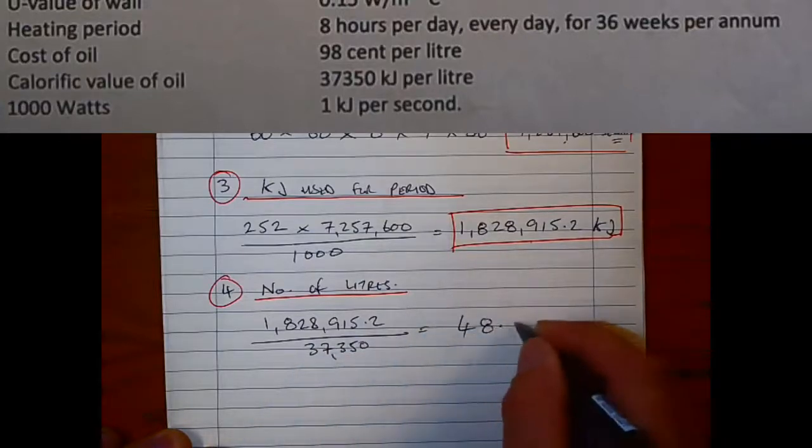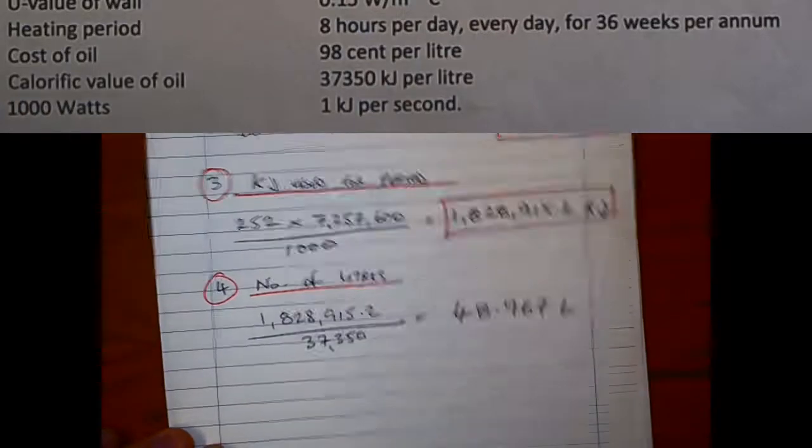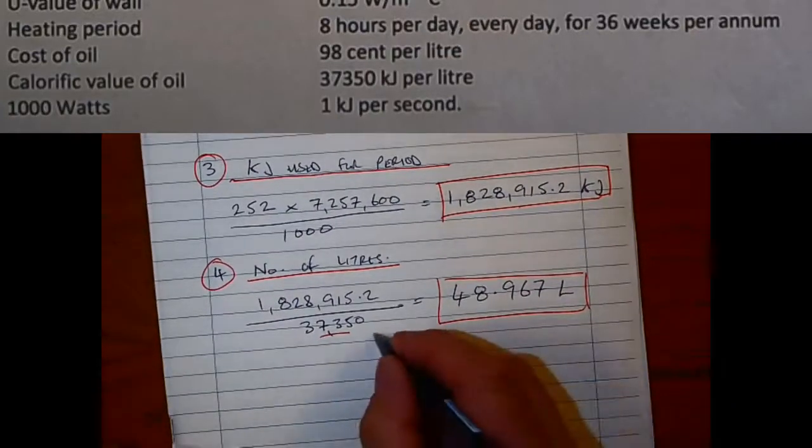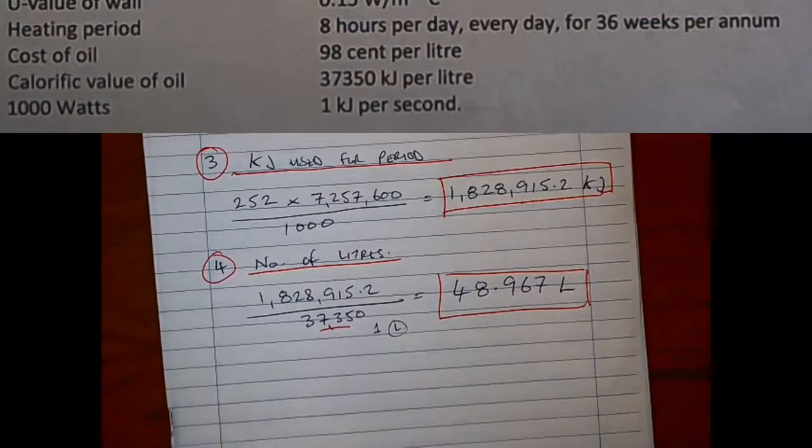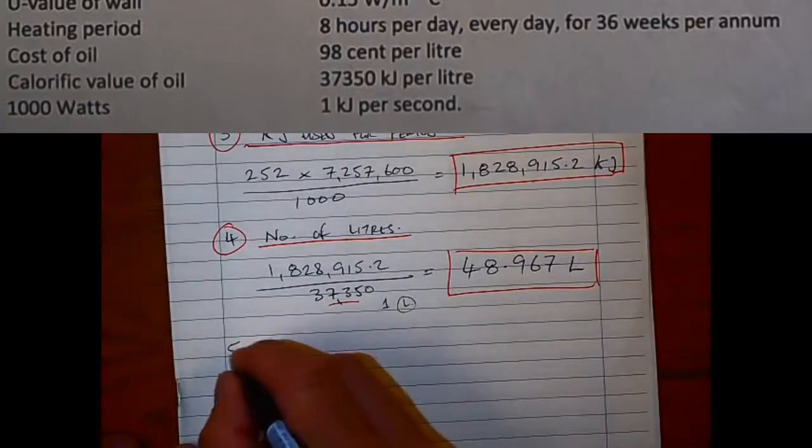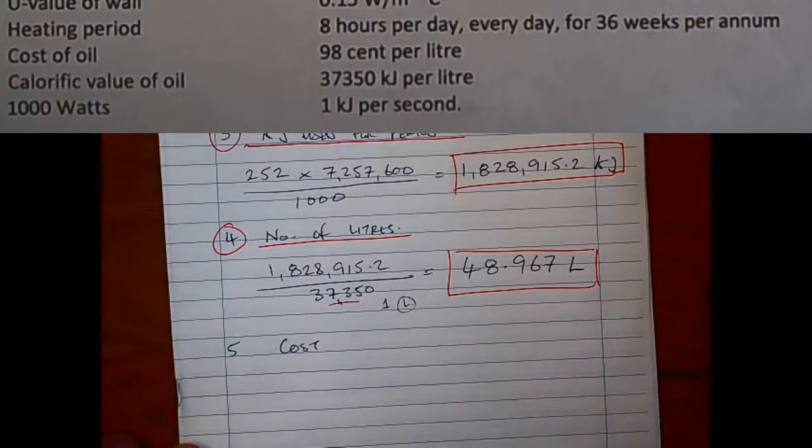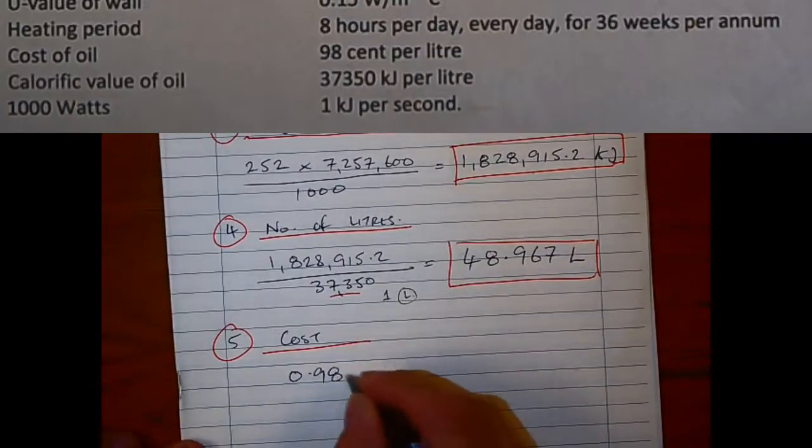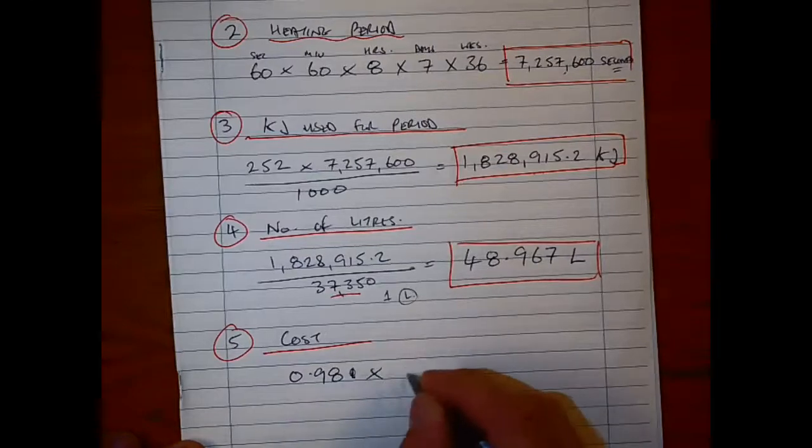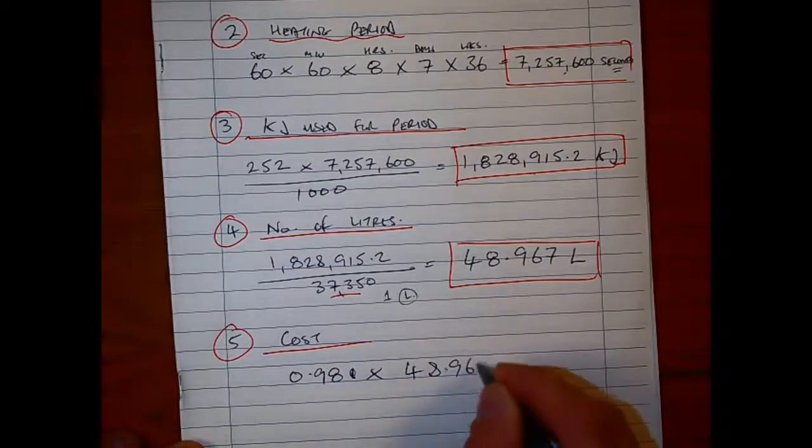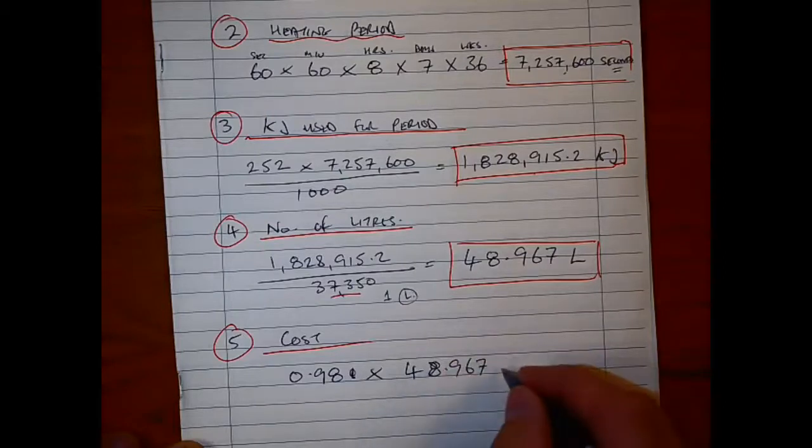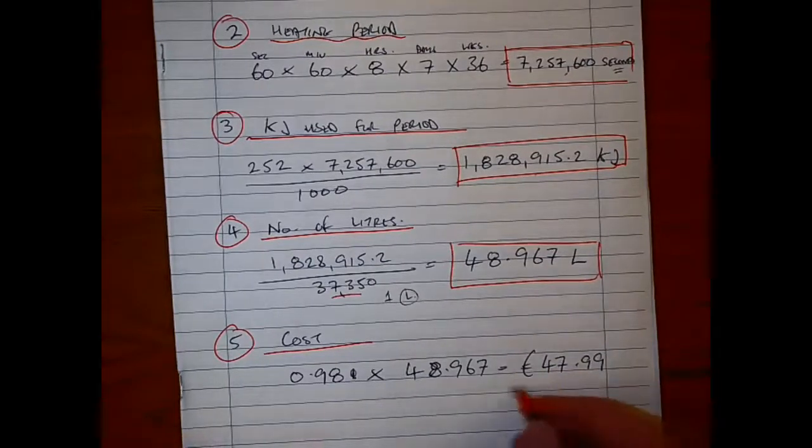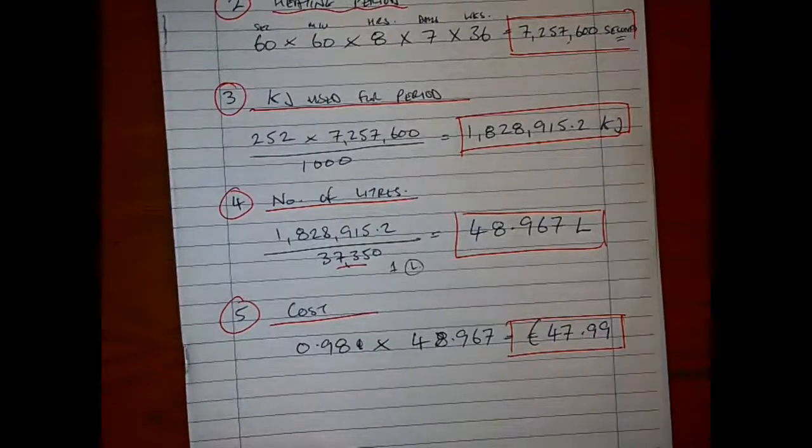When we divide that out, we get 48.967 liters. It's a fairly straightforward thing again—we've got 98 cent per liter, as you can see from the information given in the question. We know what the calorific value is. We've worked out now how many liters are required for that heating period. So the cost is as simple as working—multiplying the cost of 0.98 cent by 48.967 liters—and that gives us our cost, which is 47 euro and 99 cent. I also like to highlight that at the very end as well.